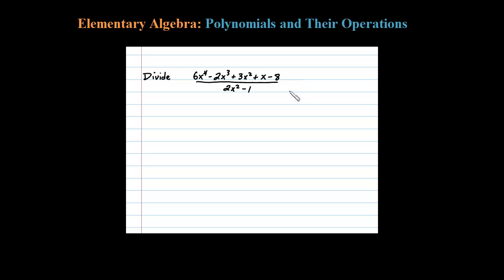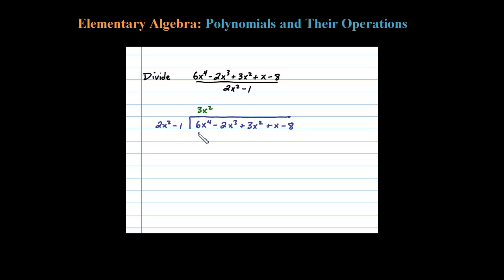Here we have to divide using polynomial long division. The goal is to match the leading term, so what times 2x squared will give me 6x to the fourth? After a little bit of thought, we can see 3x squared should do it. Multiply 3x squared times 2x squared to get 6x to the fourth — see how that matches, that's what we want. Then 3x squared times negative 1 is minus 3x squared. Notice I have lined up the like terms.